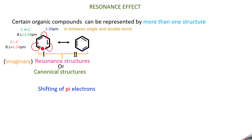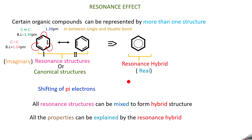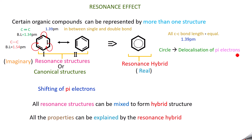The properties of benzene cannot be explained by any single resonance structure alone. Some properties are explained by one structure and others by the other structure. So these resonance structures are mixed to form a hybrid structure called the resonance hybrid, which is a real structure. All the properties of benzene can be explained by this resonance hybrid, where the carbon-carbon bond length is 1.39 picometers and all bonds are equal. The central circle in benzene represents the delocalization of pi electrons.